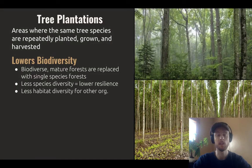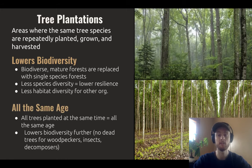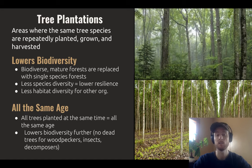Tree plantations also allow for a less diverse group of organisms and fewer habitats. All of the trees are going to be the same age — they're all planted at the same time and are about the same size. This means there will be no dead trees in this habitat, which are needed by many organisms such as woodpeckers, insects, and other decomposers. We're not going to have the same ecological succession in this ecosystem that we would in a mature forest, where trees dying and falling down is part of the ecosystem's natural progression.